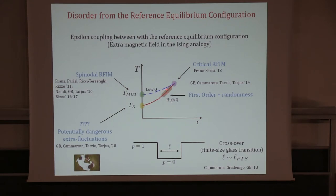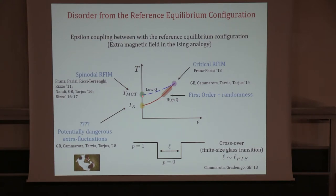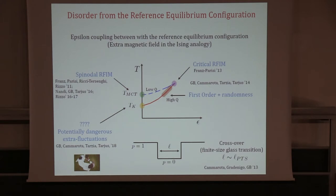The fact that this is in the universality class of the random field Ising model was proven — in the theoretical physics sense — in a specific paper, confirmed by simulations in three dimensions, and studied analytically both for the mod-coupling spinodal and in other parts of the phase diagram. This analogy with the random field Ising model is very solid and has been shown in a rigorous way in several parts of the phase diagram. What we are really interested in, however, is what happens on the epsilon equals zero line, where real liquids live, and whether approaching T_K the description in terms of a first-order transition plus random bond and random field terms is correct.